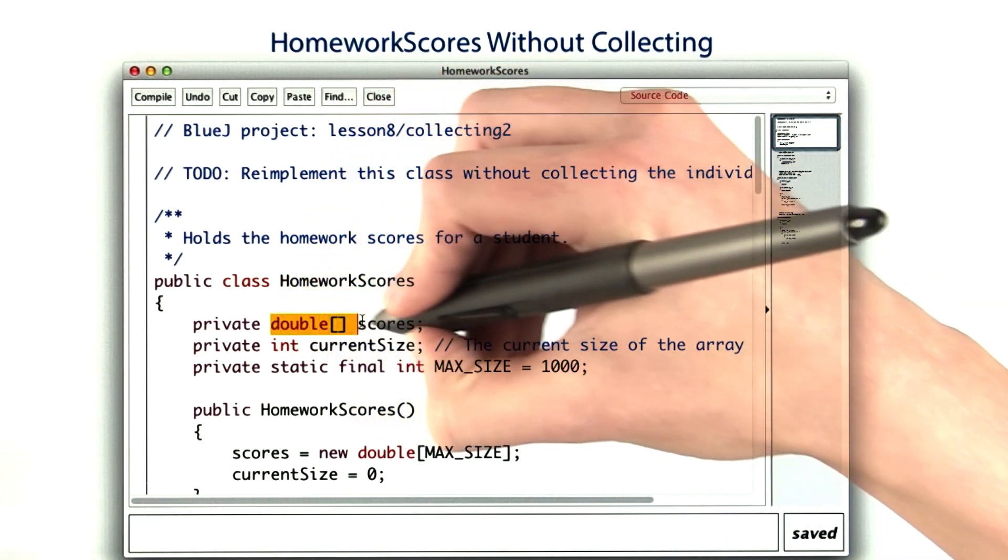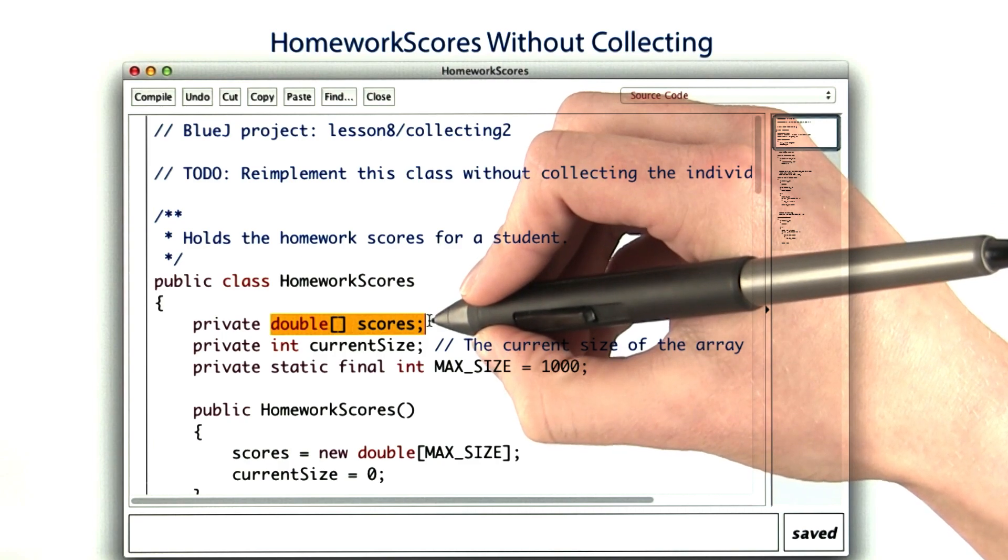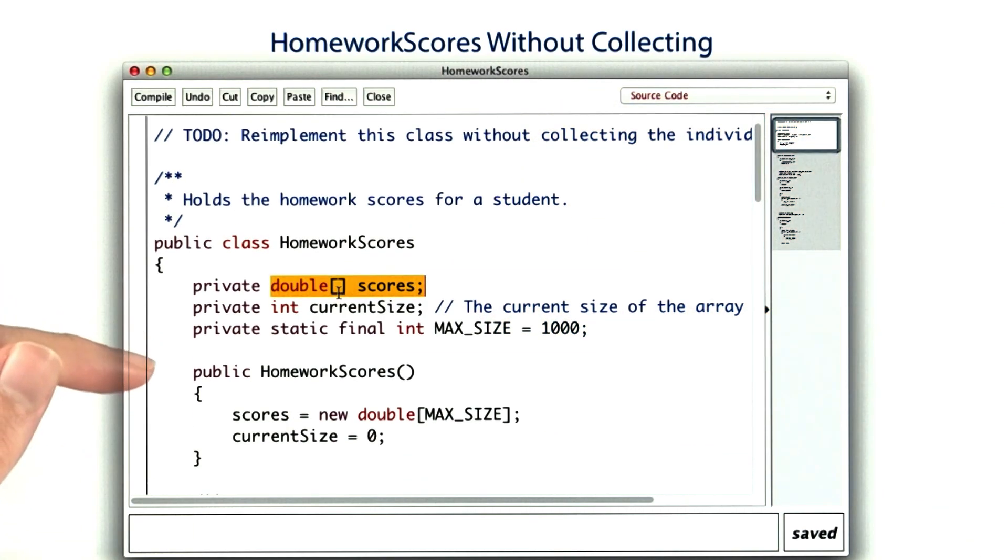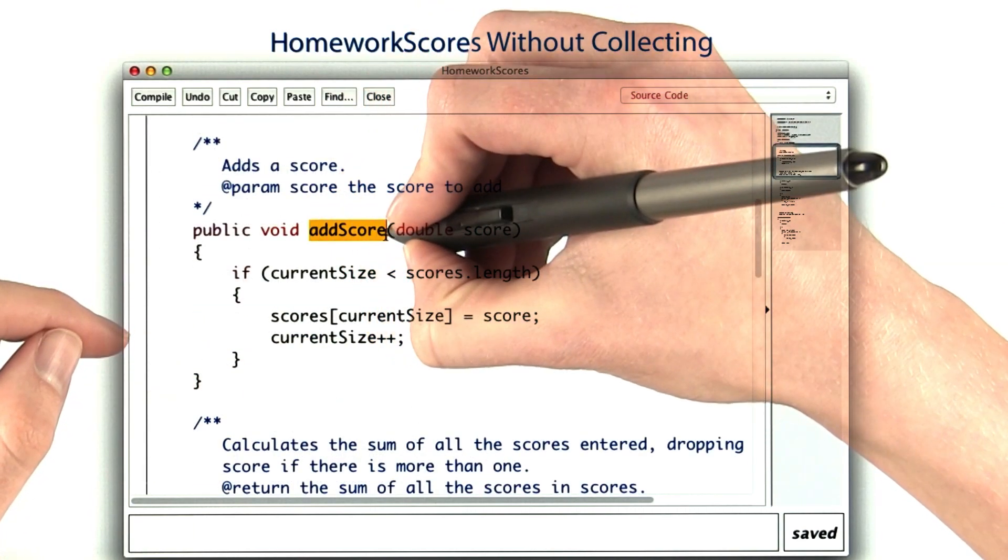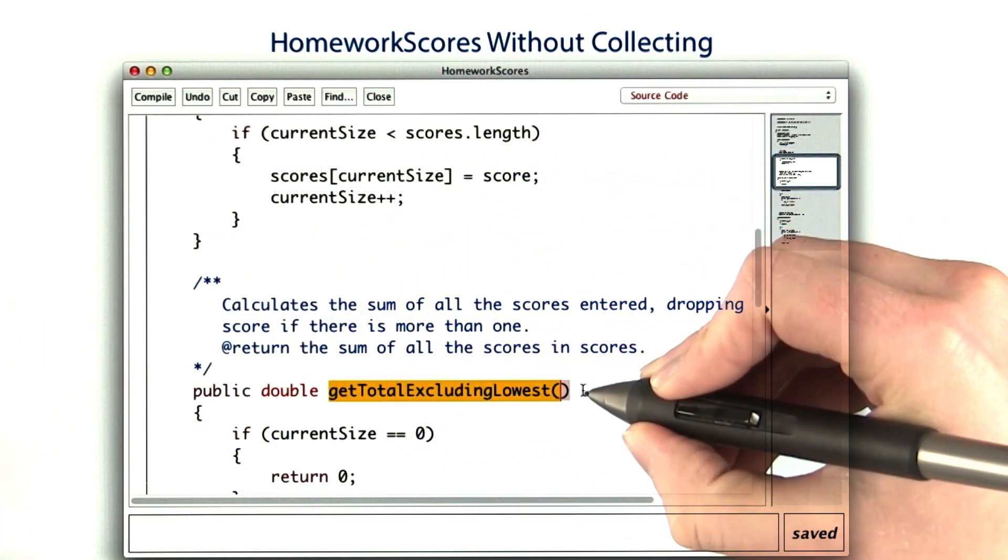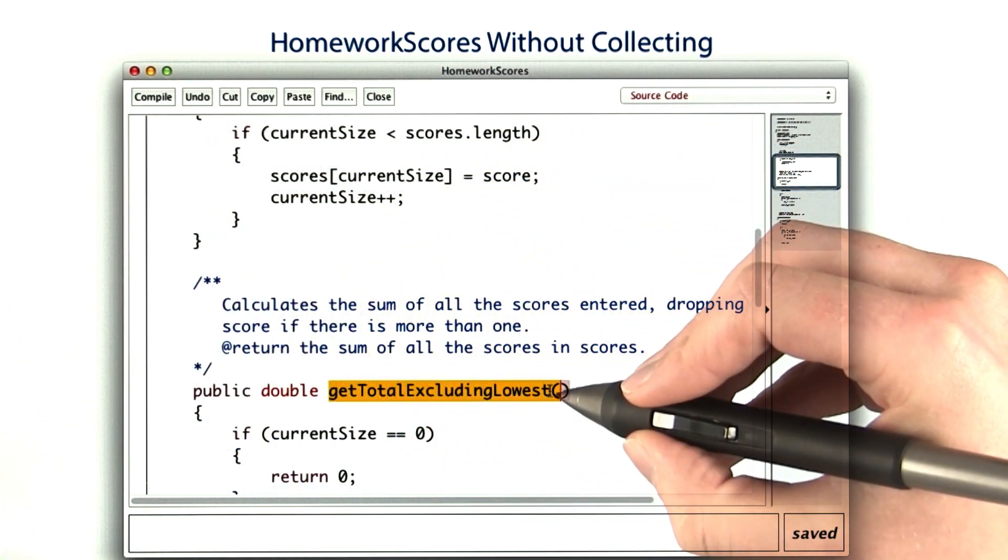We had it collect all of the scores so that we could do computations with them later. But if all that we want is to add all of the scores in and calculate the total without the lowest one, we don't need to collect all of the scores.